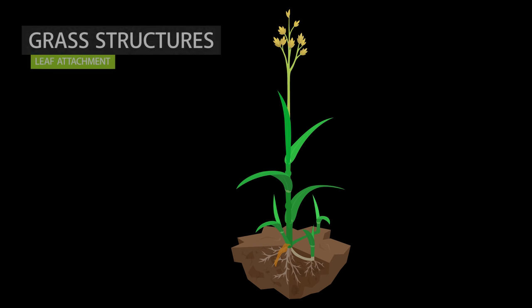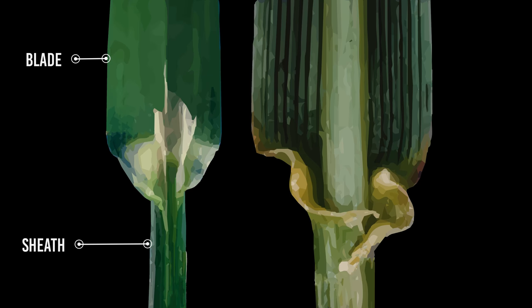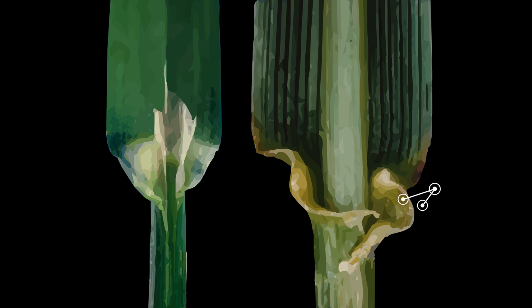The way grass leaf blades attach to the stem can also be diagnostic. A leaf sheath is the part of the leaf which encircles the grass stem before it opens out into the leaf blade. At the junction of leaf blade and leaf sheath, there is sometimes a small extension called a ligule. These vary from absent to several millimeters in length and are often membranous or consisting of a short ring of hairs. Auricles are small outgrowths just below the ligule that clasp the plant's stem. They may be finger-like, hairy, or absent.